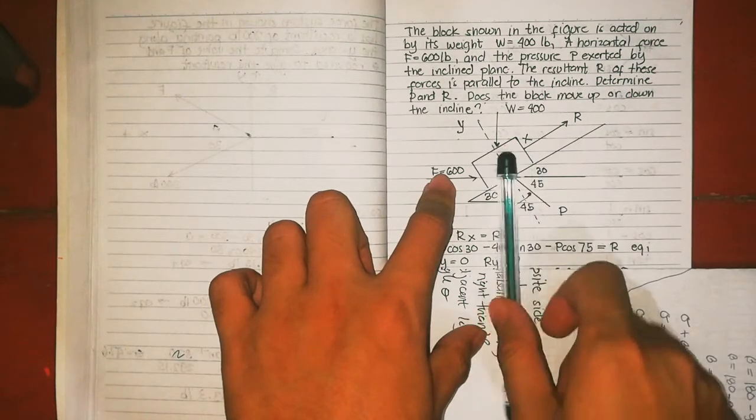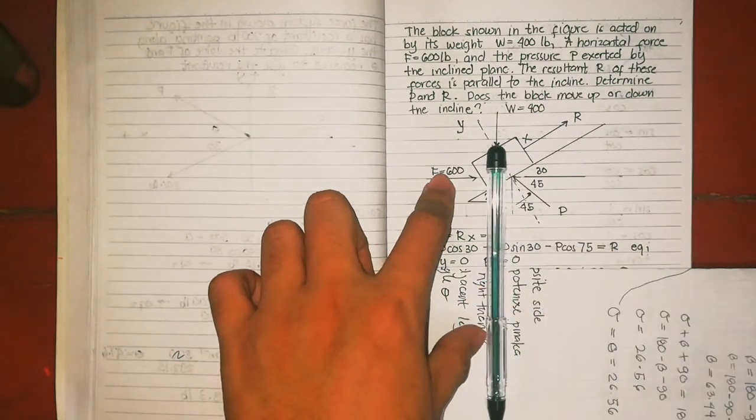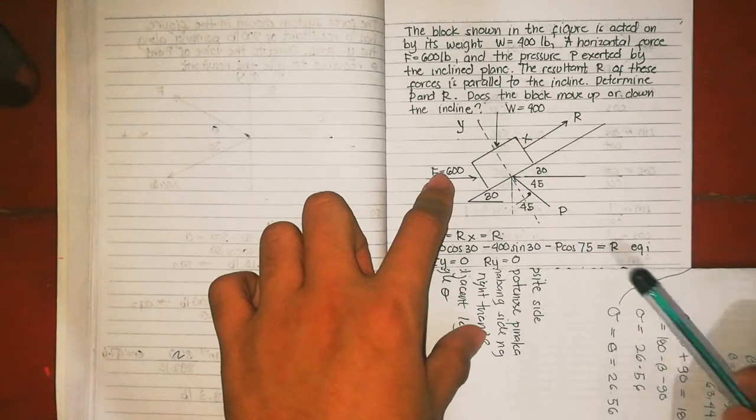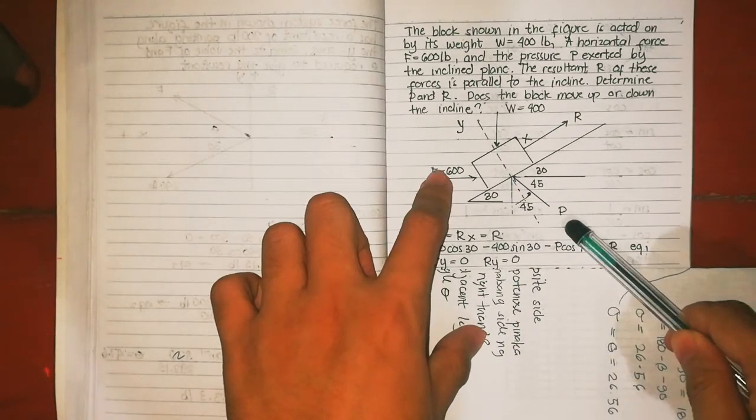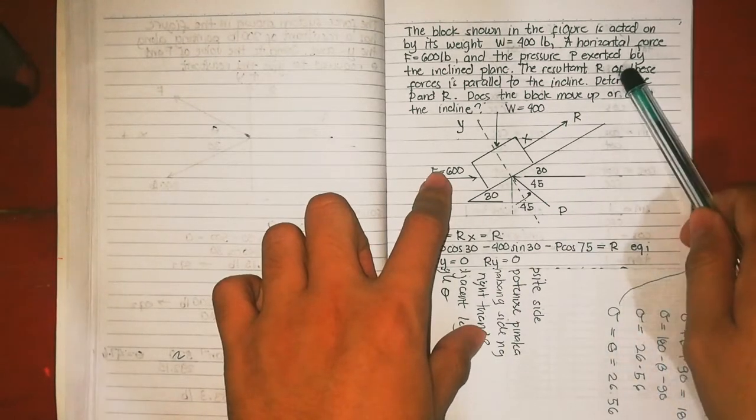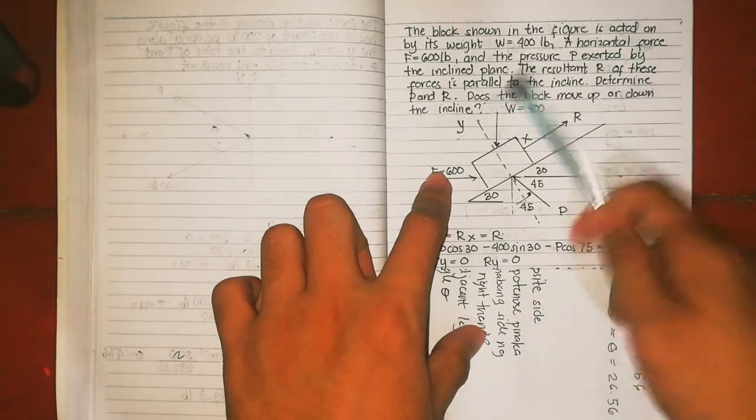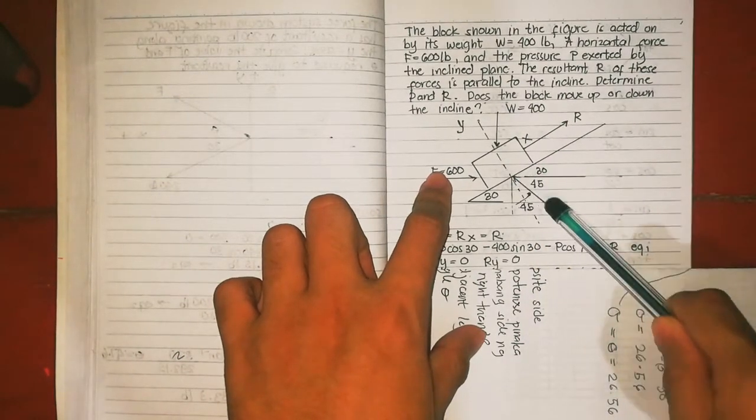The weight is pointing downwards. We also have horizontal P exerted by the inclined plane, the resultant P.